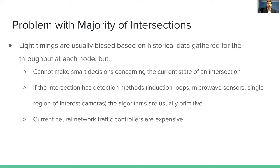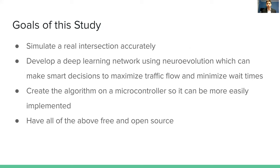Here's the problem with the majority of intersections today. Light timings are usually based on historical data gathered at each lane, which means you can't make smart decisions considering the current state of the intersection. Some conventional algorithms work around this using detection methods such as induction loops, microwave sensors, and cameras. But these algorithms are usually primitive and use a first-come-first-serve approach. Neural network traffic controllers do exist on the market, but they're too expensive to be mainstream.